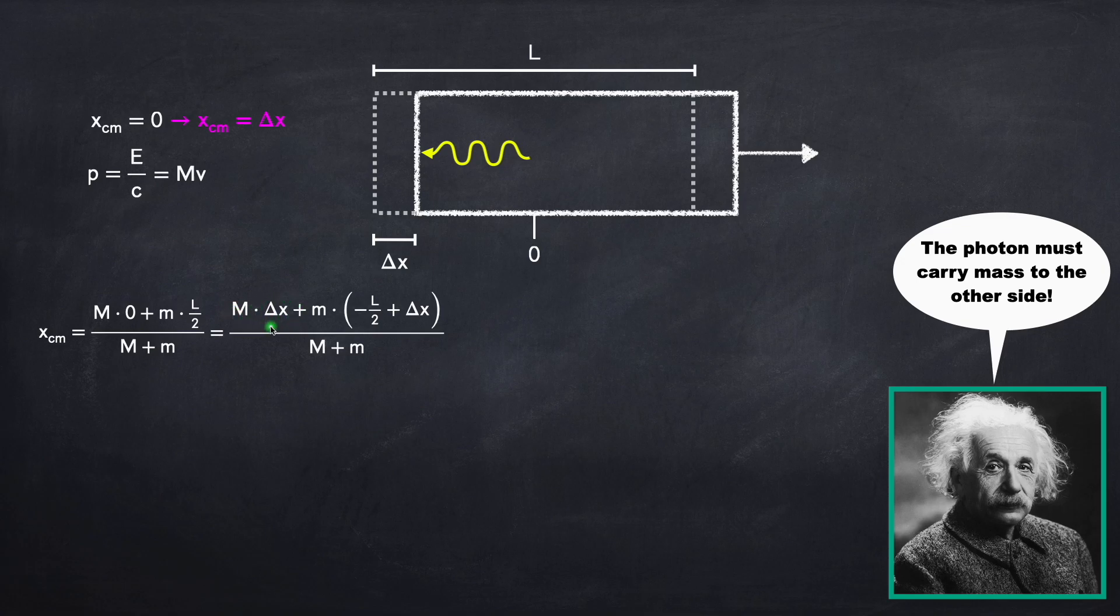Well, the new center of mass will be equal to the mass of the box times its new position, which is delta x, plus the mass of the photon times its new position, which is the position of the left side of the box, which was originally sitting at negative L over 2, but it's been shifted over by delta x. And again, we have to divide by the total mass of the system.